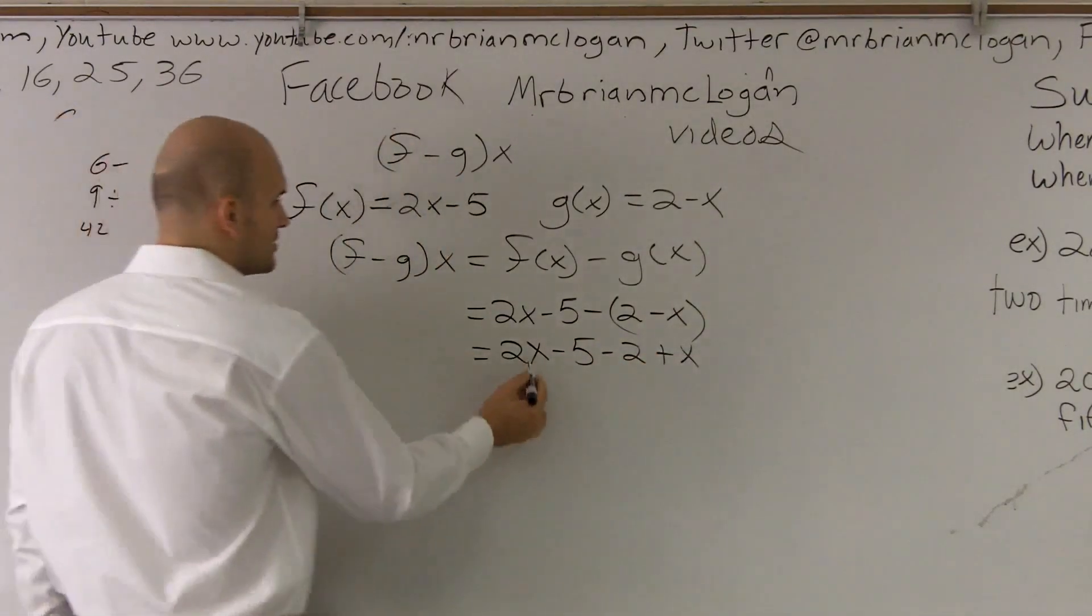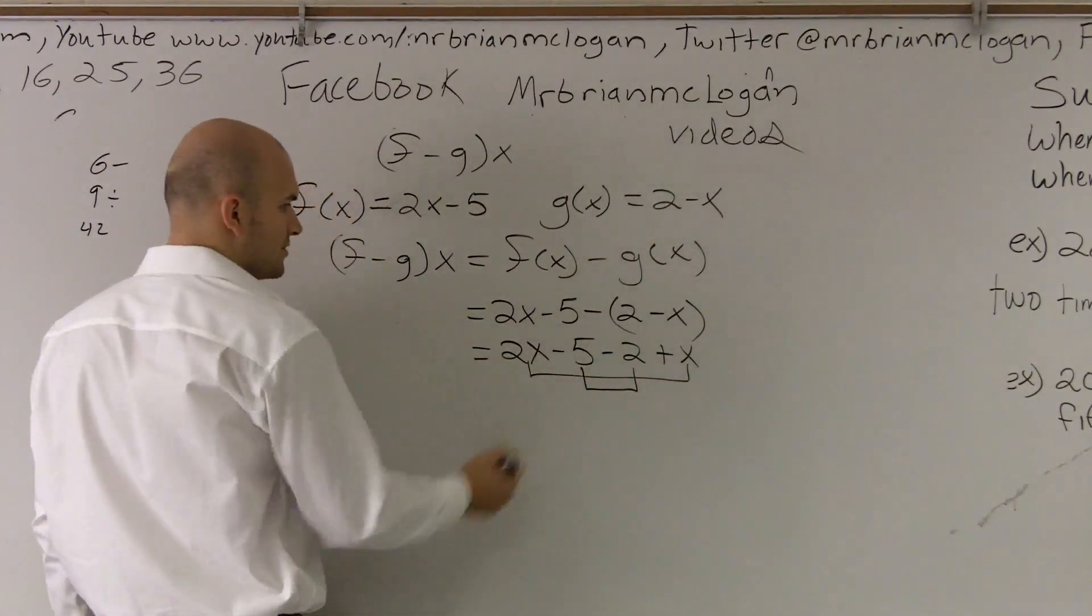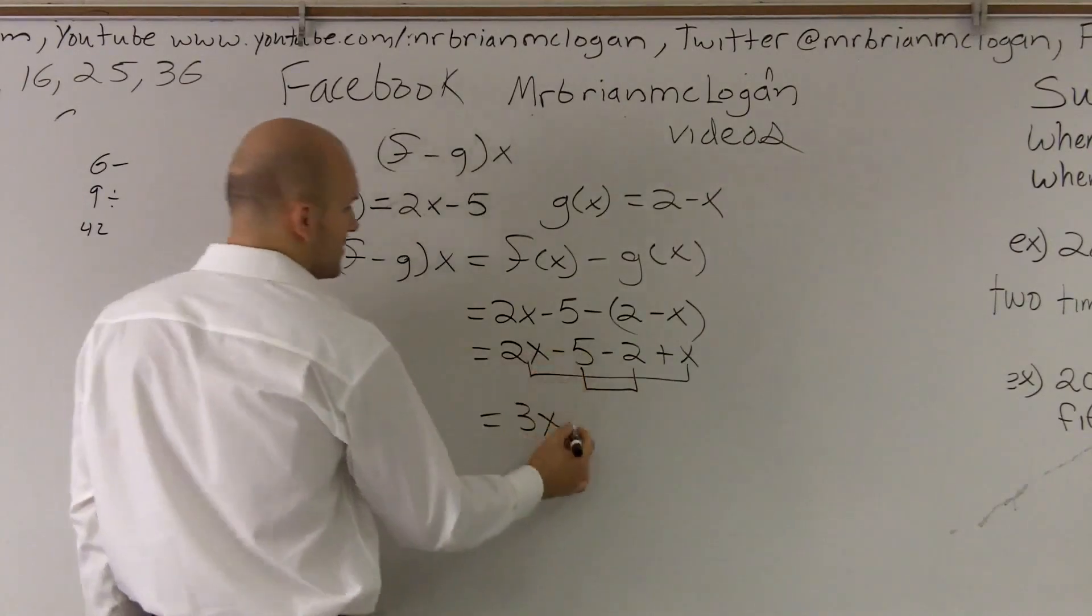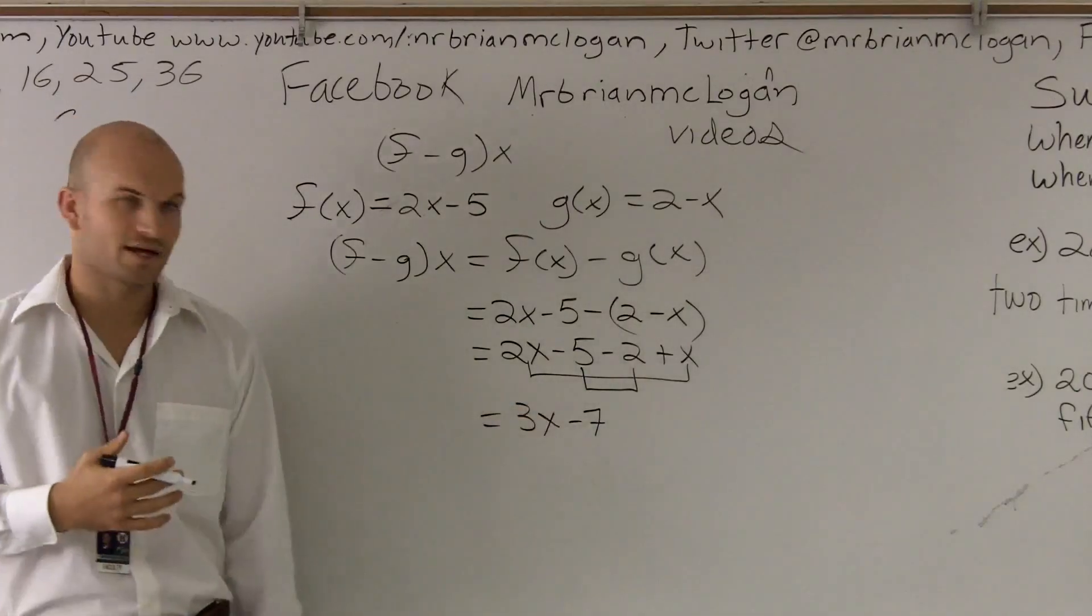Then I can combine my like terms, 2x and x, and negative 5 and negative 2. So therefore, this becomes now 3x, and negative 5 minus 2 gives you a negative 7.